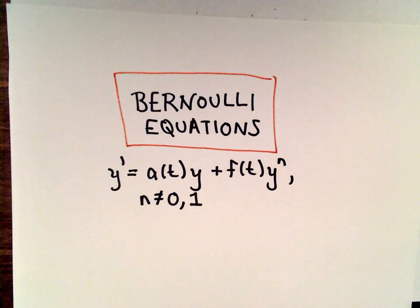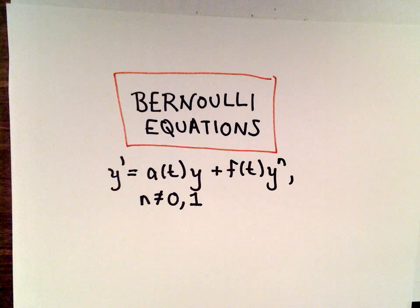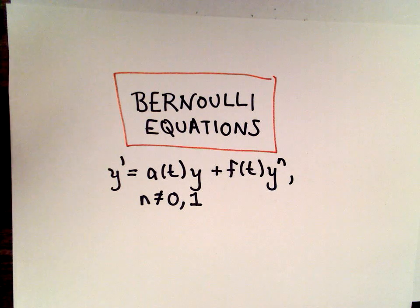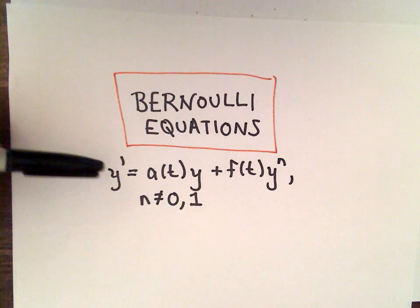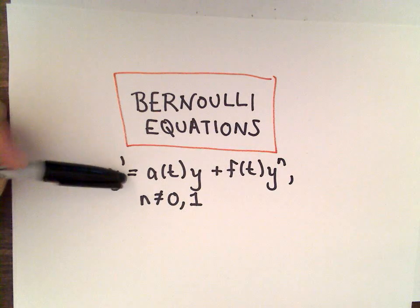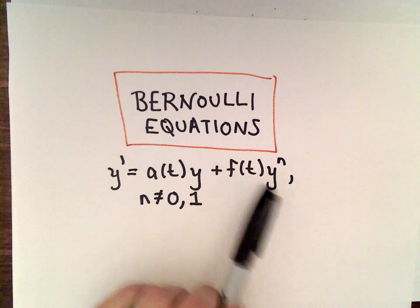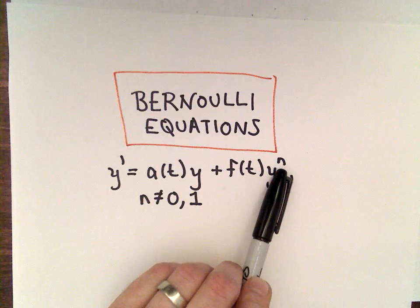Okay, so in this video I want to start talking about Bernoulli equations. A Bernoulli equation is of the form y' = a(t)y + f(t)y^n, where n is not equal to 0 and 1.